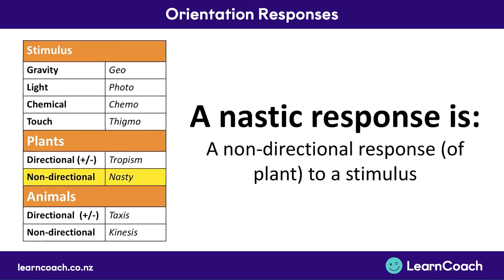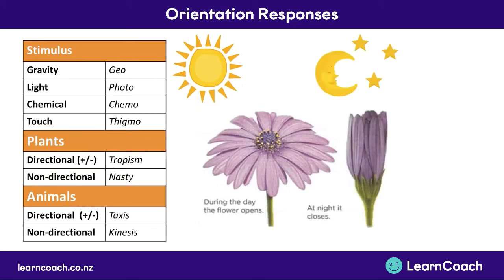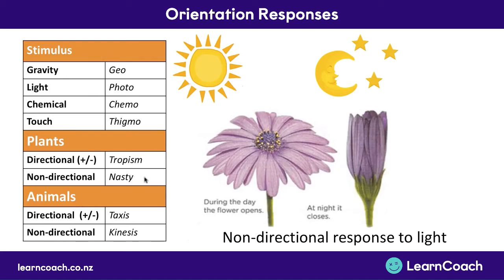Now let's move on to nastic responses. A nastic response is a non-directional response of a plant to some kind of stimulus — there's no positive or negative direction. For example, some flowers are open during the day but close at night. This is a non-directional response to light, so we join 'photo' with 'nasty' — photo nasty. There's no positive or negative because there's no direction — no towards or away from.